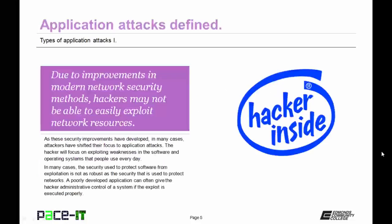Due to improvements in modern network security methods, hackers may not be able to easily exploit network resources or devices. As these security improvements have developed, in many cases the attackers have shifted their focus to application attacks. The hacker will focus on exploiting weaknesses in the software and operating systems that people use every day. In many cases, the security used to protect software from exploitation is not as robust as the security used to protect networks. A poorly developed application can often give the hacker administrative control of a system if the exploit is executed properly. And that briefly defines an application attack.